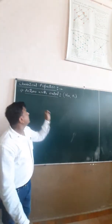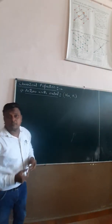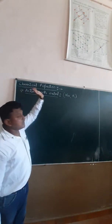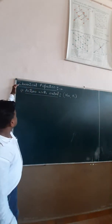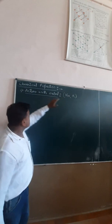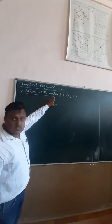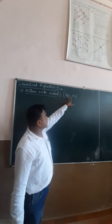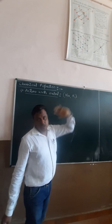Dear friends, let us move on to the next part of the alcohol chapter: chemical properties. In the chemical properties of alcohol, we start with action with metals — the electropositive metals like sodium or potassium.